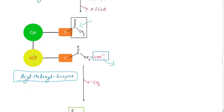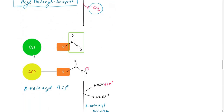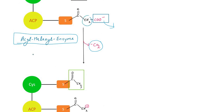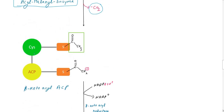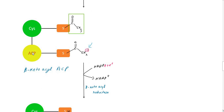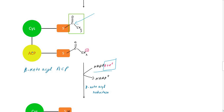In the condensation-decarboxylation step, the acetyl group and malonyl group condense, and CO2 is released (decarboxylation). CO2 is lost, and the carbon chain is extended. This step has two parts: first there is a condensation, and then there is a first reduction step in which NADPH donates hydrogen.